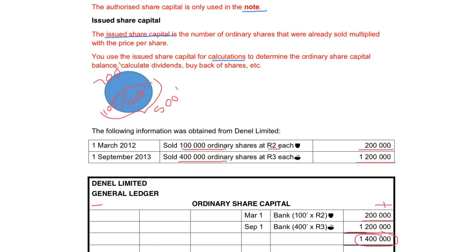The authorized share capital is this blue ball that consists of a million shares, and you will never use that to do any recordings. You will look every time at how many shares were already issued, and on the number of shares that were issued, you will do all your calculations.